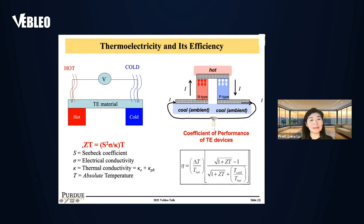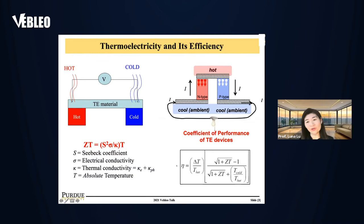The quality of a thermoelectric material is measured by a unitless figure of merit called ZT. The figure of merit has three parameters: the Seebeck coefficient, electrical conductivity, and thermal conductivity, which has contributions from the electron part and phonon lattice vibration. The total efficiency of the thermoelectric device as a heat engine is determined by material quality and is ultimately bounded by Carnot efficiency — delta T over T-hot. The temperature of the hot junction is therefore an important parameter, which is something we have focused on in our work.